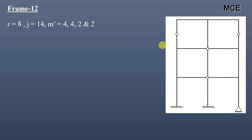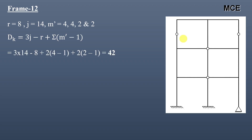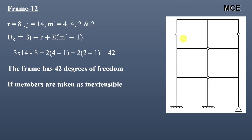For frame 12, this frame has 8 reactions, 14 joints, and 4 internal hinges. For 2 of these internal hinges, the number of members meeting is 4, and for the other 2, it is 2, so m′ = 4, 4, 2, and 2. The value of DK is equal to 42, meaning this frame has 42 degrees of freedom. If members are taken as inextensible, this frame has 17 inextensible members, so DK = 42 − 17 = 25.